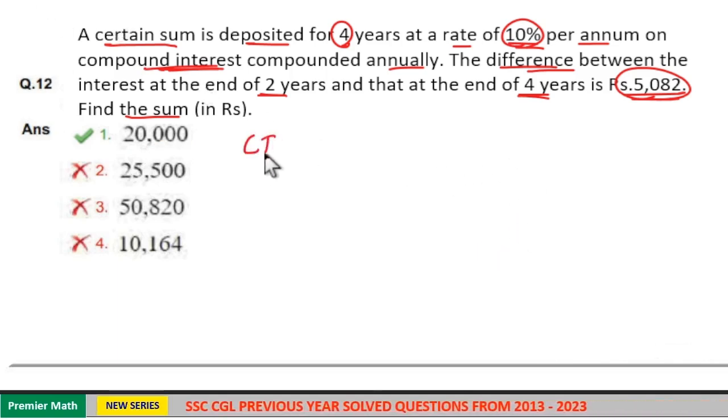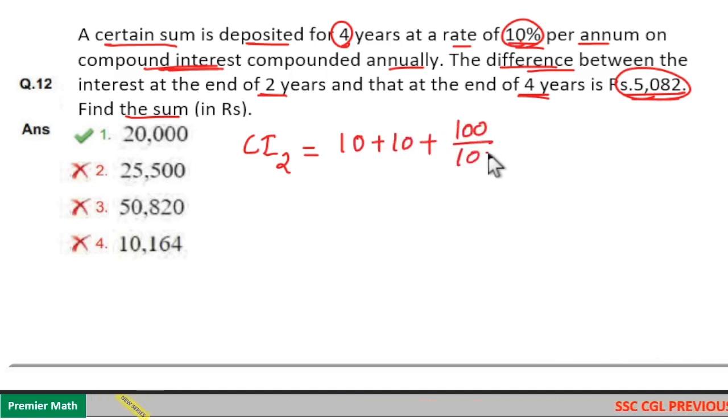That is, compound interest for 2 years is equal to, for 1 year it is 10. So for 2 year, go for the successive formula. That is 10 plus 10 plus 10 into 10 divided by 100, which is equal to 21%. For 2 year, compound interest is 21%.